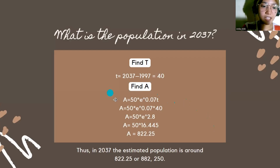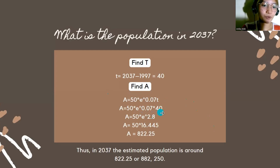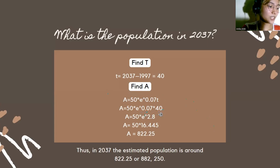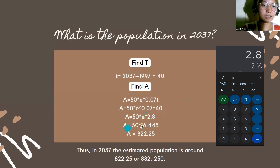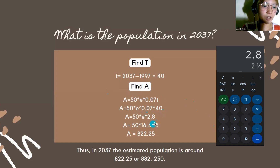We use the same formula again. A equals 50 times E raised to 0.07 times 40. We compute the exponent first: 0.07 times 40 equals 2.8. So 2.8 is the result of the growth rate multiplied by the time.